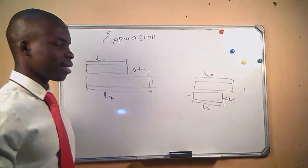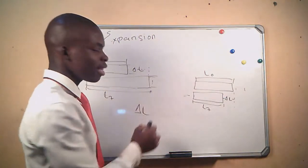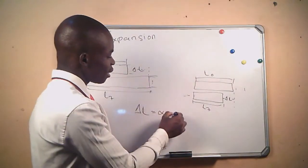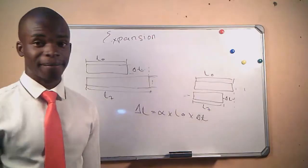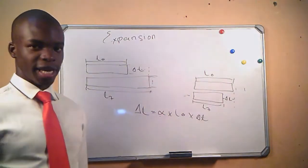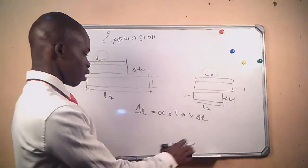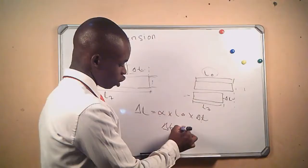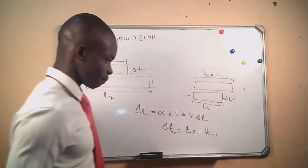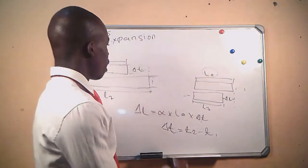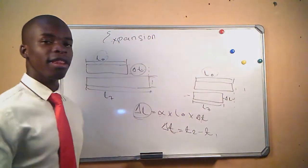How do we calculate the change in length of a material? We have a formula: the change in length is equal to the coefficient of linear expansion times the original length times the change in temperature. This is our coefficient of linear expansion, this is our original length, and this is our temperature difference, which is given by T2 minus T1.